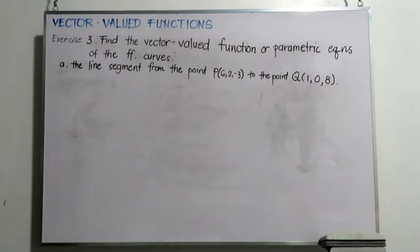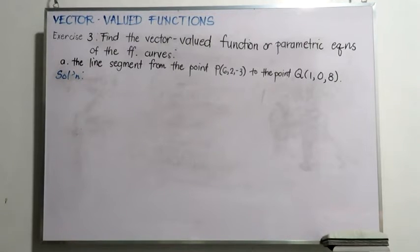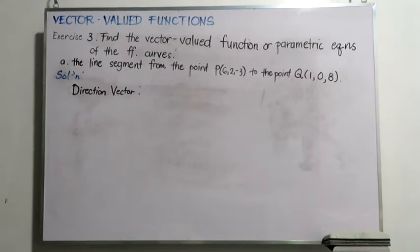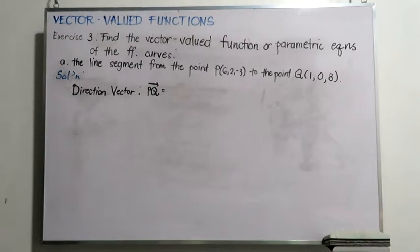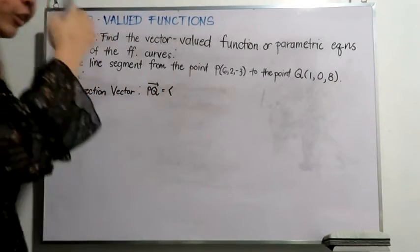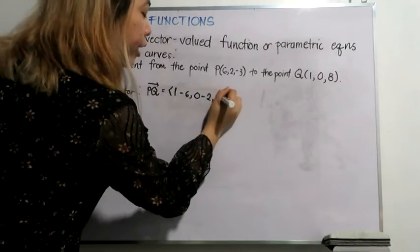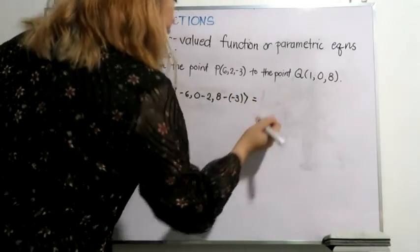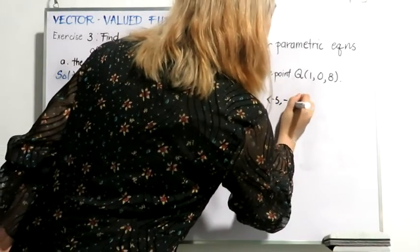For the next two exercises, we need to find the vector-valued function or parametric equations of different curves. We start with the line segment from the point P to the point Q given by the following coordinates. For this example, it is enough to find a direction vector and use one of the points in order to find the vector-valued function. A direction vector is the vector PQ, which can be obtained by subtracting the coordinates of P from the coordinates of Q. Thus, the vector PQ has components (1 minus 6), (0 minus 2), and (8 minus negative 3), giving us the vector (negative 5, negative 2, 11).